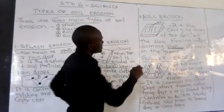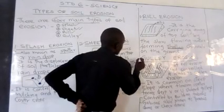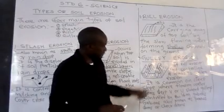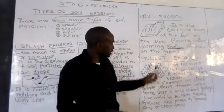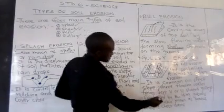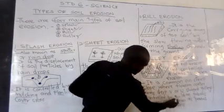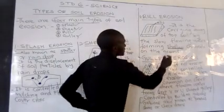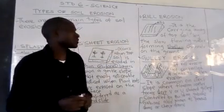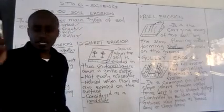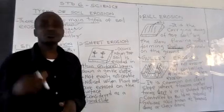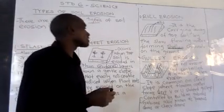The fourth and last type of soil erosion is gully erosion. You can see it in the picture — gullies are D-shaped or U-shaped. The difference between rill and gully erosion is depth: gullies are deep, while rills are shallow. If rill erosion is not controlled, it leads to gully erosion. It is common on steep slopes where flowing water forms deep U-shaped or V-shaped valleys.